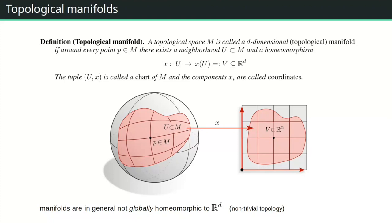The definition of a topological manifold: it is basically a topological space which is second countable and Hausdorff. If you have a d-dimensional manifold, this means that around each point on the manifold you find a neighborhood, and there is a homeomorphism acting from this neighborhood to some corresponding open subset in Euclidean space. This is called a coordinate chart. Locally, the manifold is d-dimensional, but globally it is not necessarily homeomorphic to Euclidean space — like a sphere, which you cannot deform into a flat Euclidean space. Only locally does it look like that.